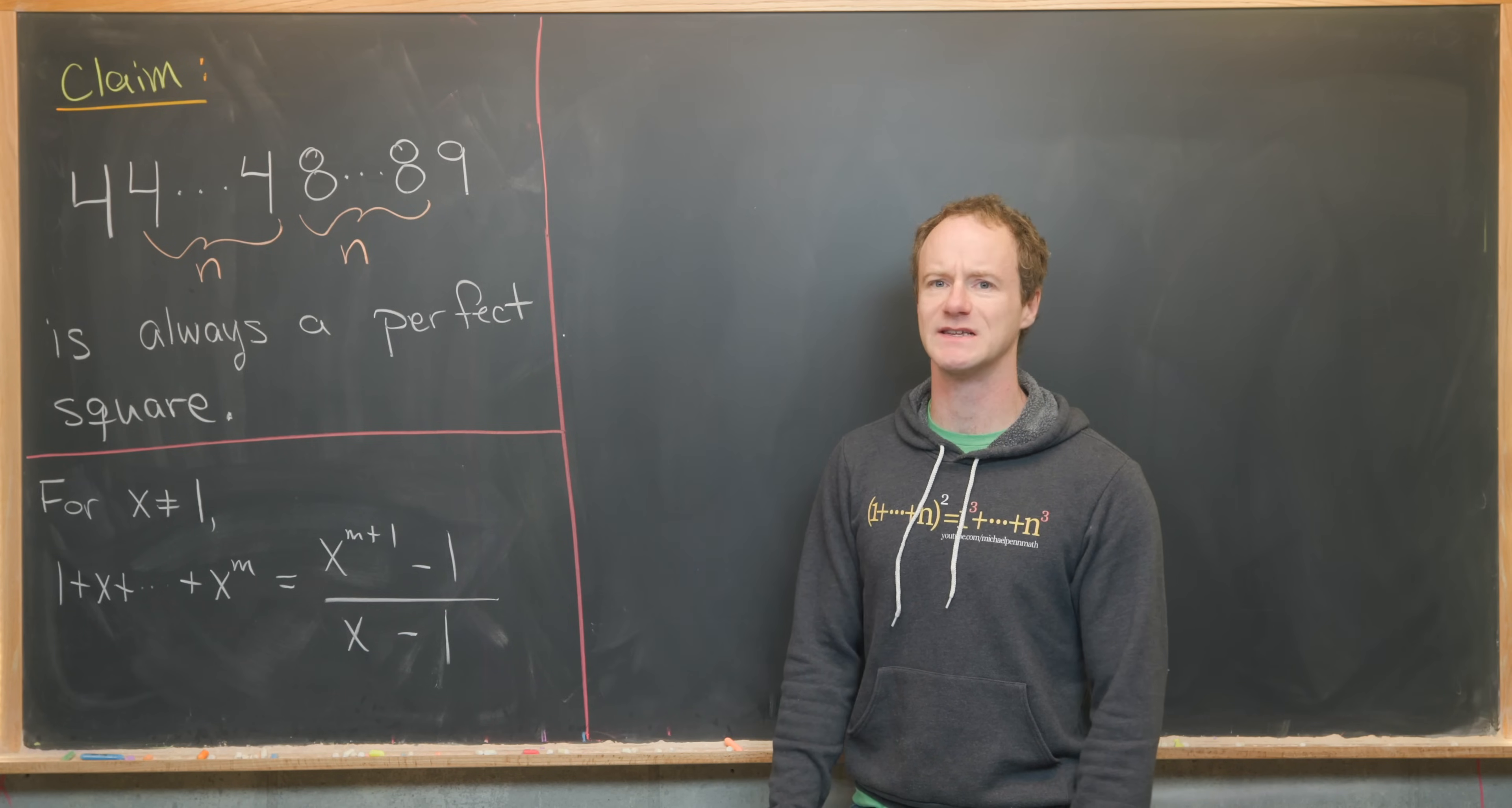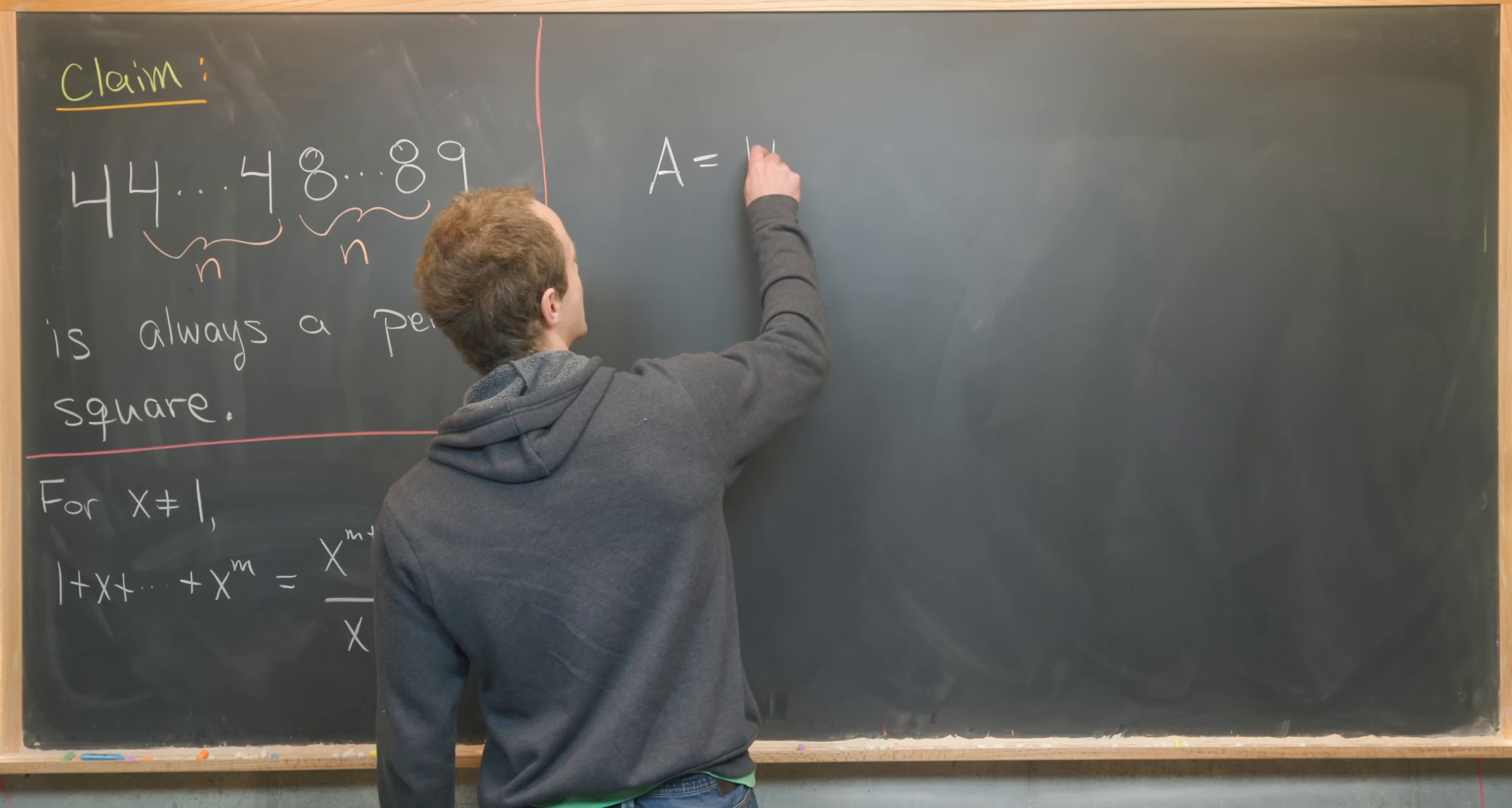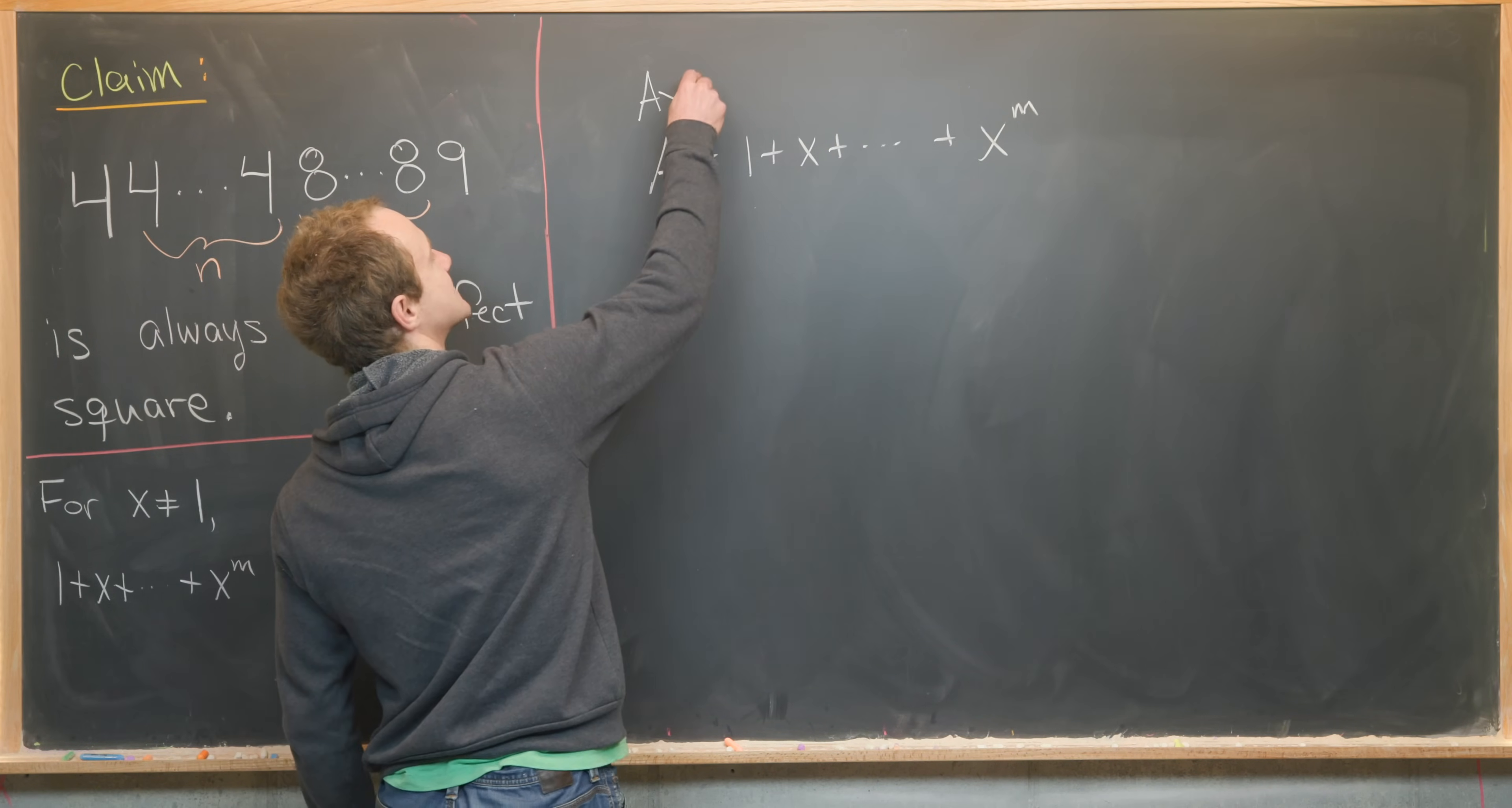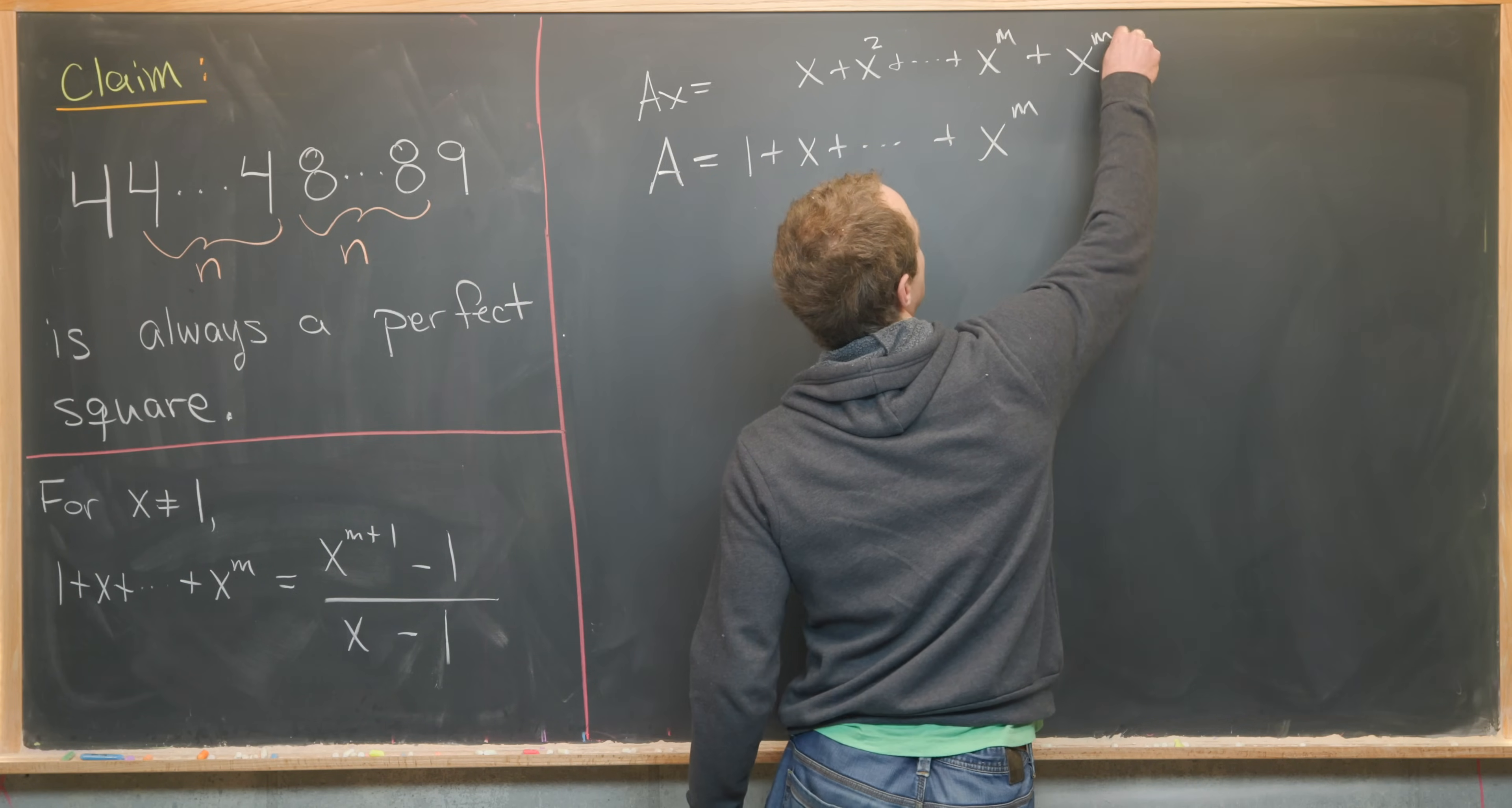So we're going to do a fairly standard proof of this identity, and that starts by setting the left hand side equal to some variable and then solving for that variable. So I'll set it equal to capital A. So we've got capital A is 1 plus x plus all the way up to x to the m. Now next, we're going to multiply this entire equation by x. x is sometimes called the common ratio here. So that'll give us Ax, and we can distribute the x through, giving us x plus x squared, all the way up to x to the m plus x to the m plus 1.